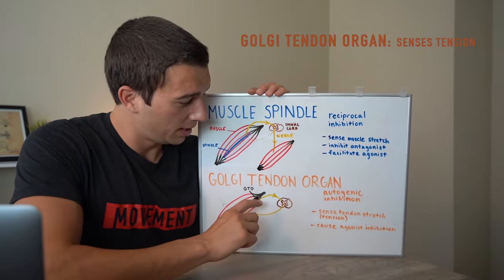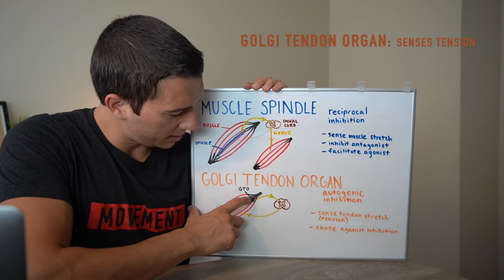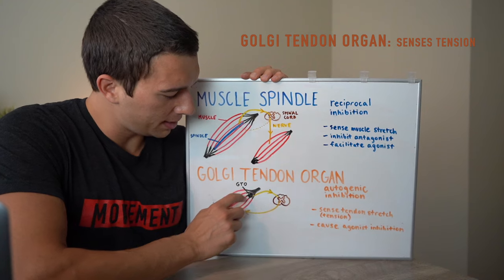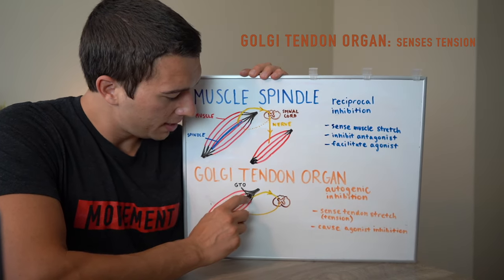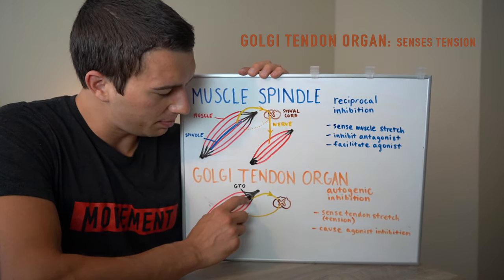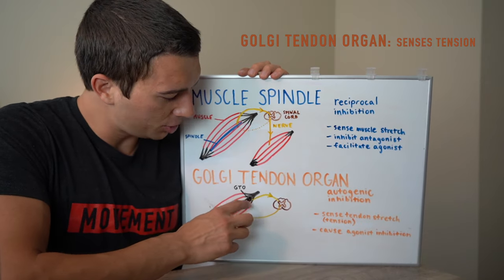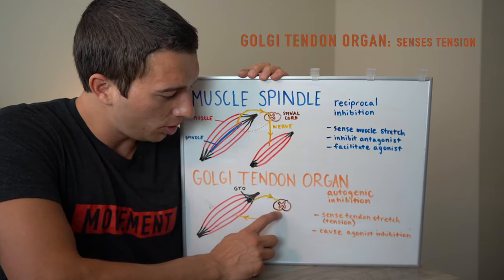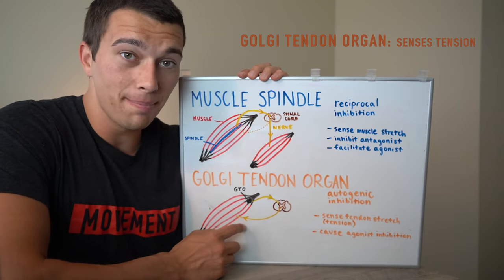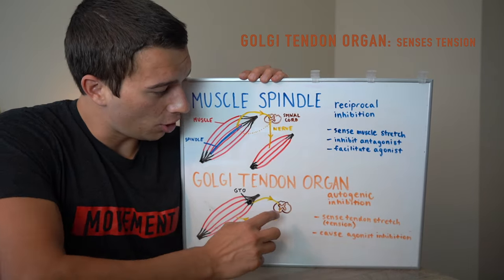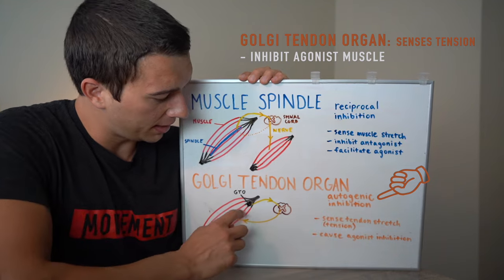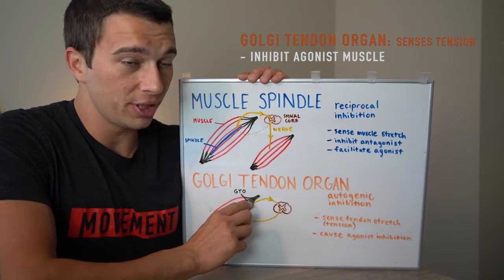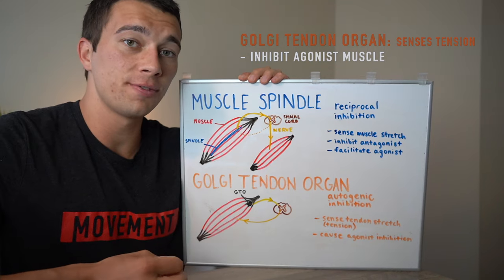Moving on to the Golgi tendon organ — represented here as a black dot. This is the muscle, this is the tendon connecting the muscle to the bone, and within that tendon we have the Golgi tendon organs. There are thousands of them within the tendon, but we're representing just one here, which is sending a signal out to the spinal cord and back to the same muscle. That is called autogenic inhibition — sending a signal out and back to the same muscle.